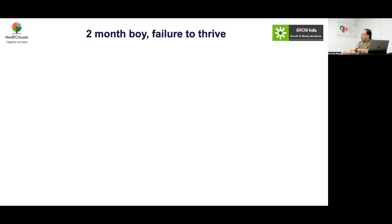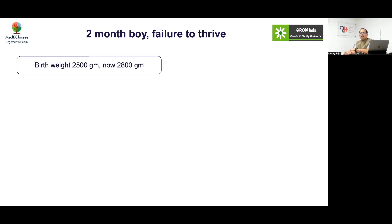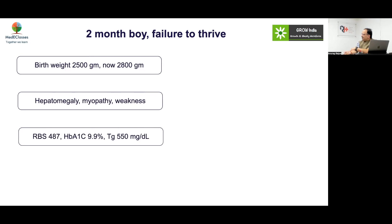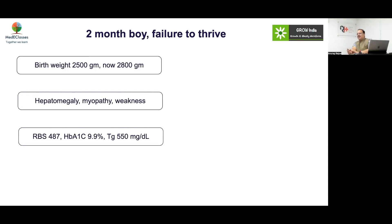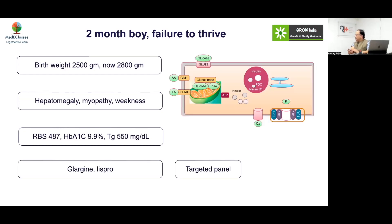Case 4: A 2-month-old boy with failure to thrive, birth weight 2500 g, now 2800 g, hepatomegaly, myopathy, weakness, very high sugars and high triglycerides. This is permanent neonatal diabetes. Hepatomyopathy and weakness suggest a DEND syndrome. Developmental delay along with muscular weakness are present. A potassium ATP channel defect was found — specifically KCNJ11 — and treatment was initiated with sulfonylurea.